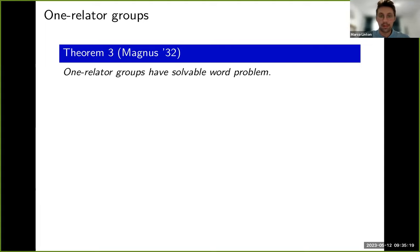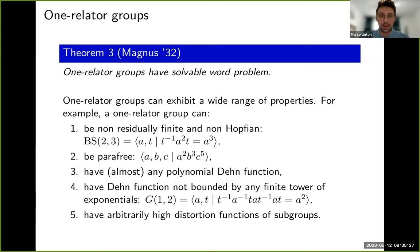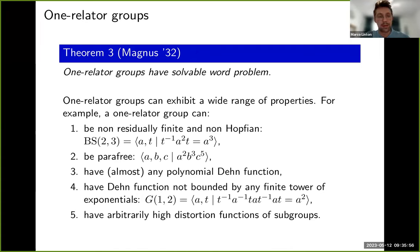There are many tools to study certain subclasses of one-relator groups but studying all at once is often difficult. Some examples: Baumslag and Solitar introduced the Baumslag–Solitar groups, which are non-residually finite and non-Hopfian. Baumslag introduced the class of parafree groups — these have the same nilpotent quotients as free groups. One-relator groups can have almost any polynomial Dehn function, or even a Dehn function not bounded by any finite tower of exponentials, such as the Baumslag–Gersten group. Their subgroups can also have arbitrarily bad distortion functions.